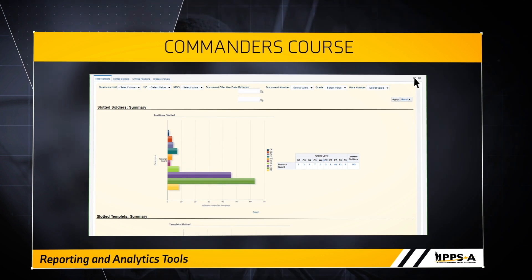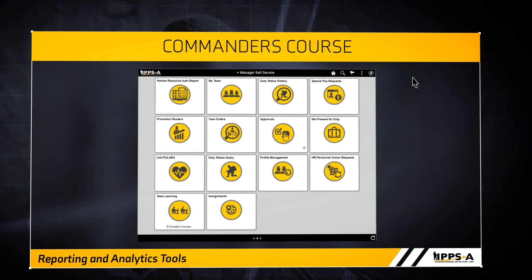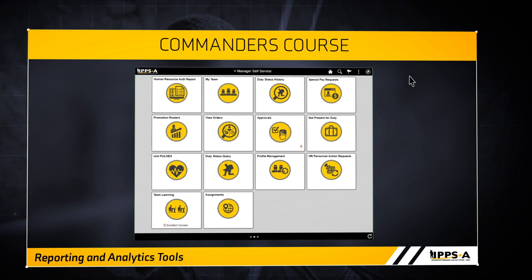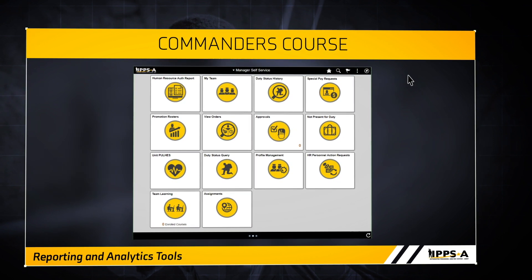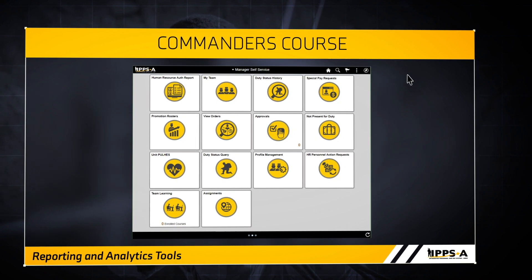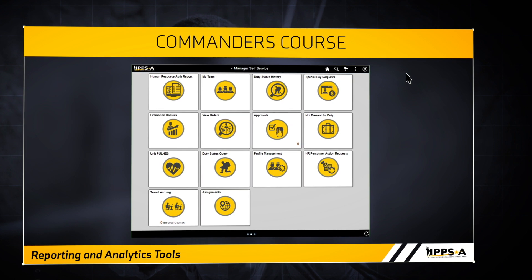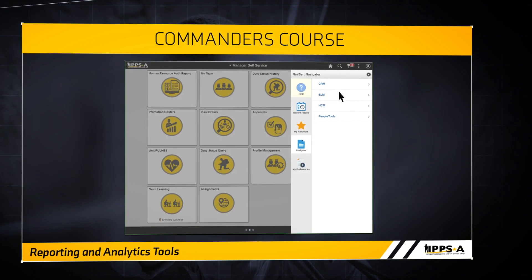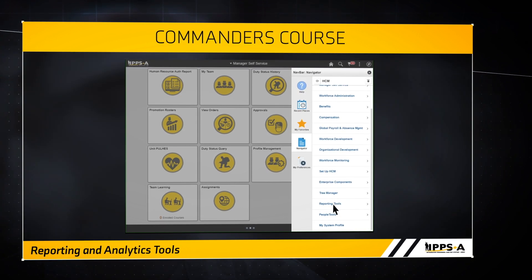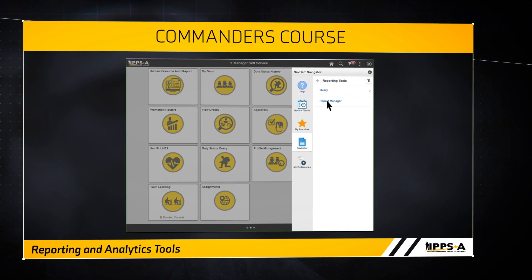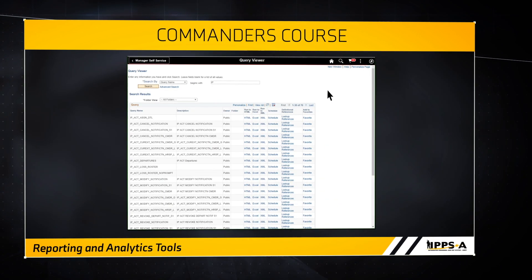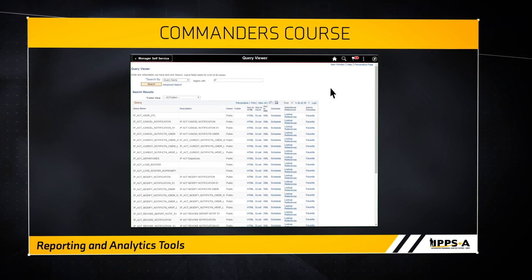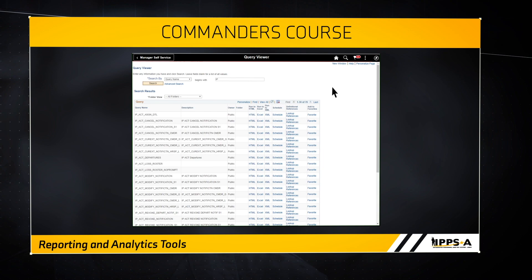As covered in the iHub video, you also have access to several predefined queries from the manager dashboard. You can access all IPSA public queries through Query Viewer. To get to the Query Viewer, open the nav bar, then go to HCM, Reporting Tools, Query, and then Query Viewer. In the Query Viewer, there are currently over 70 queries available. The IPSA-specific queries start with IP.